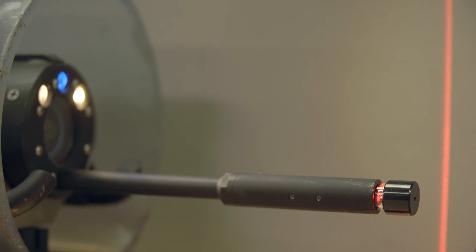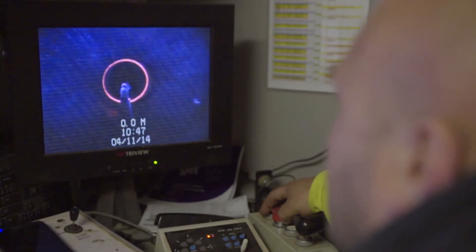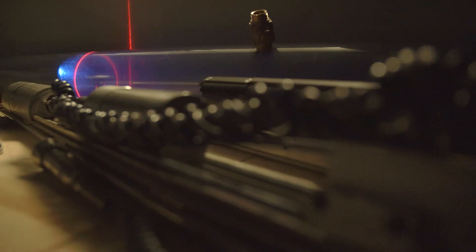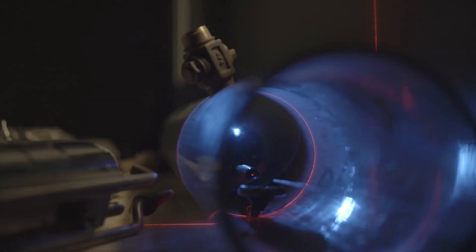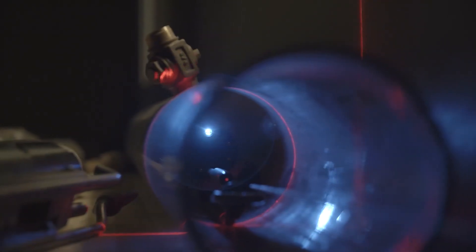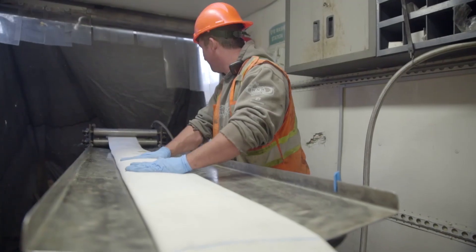In addition we use a laser profiler to measure the inside diameter of the water main we are working on. This allows us to create a 3D model of the main ensuring that the liner we install is the appropriate size.